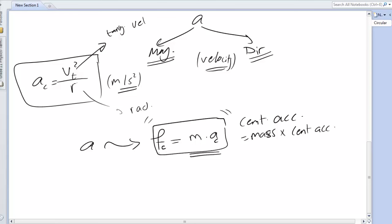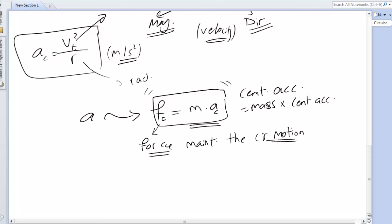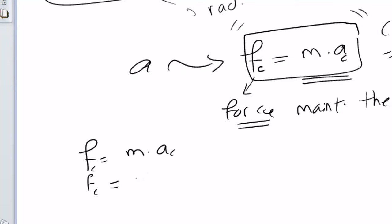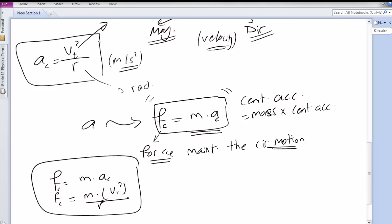The centripetal force Fc can be defined as the force that maintains the circular motion. Without this force, there will be no circular motion. By substituting the value of Ac, since Ac = Vt²/R, we get Fc = m × Ac = m × Vt²/R. This is a direct substitution, and Fc is measured in newtons.